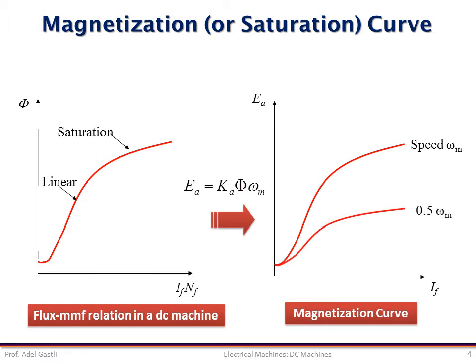Since the back EMF is also a function of the speed, if the speed changes, the magnetization curve changes also. Therefore, for each speed we can obtain a different magnetization curve.